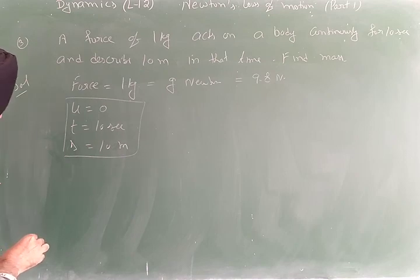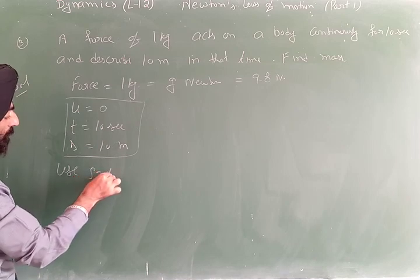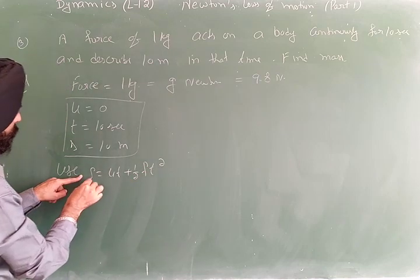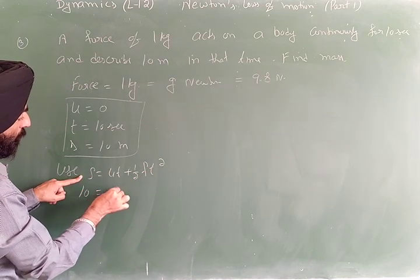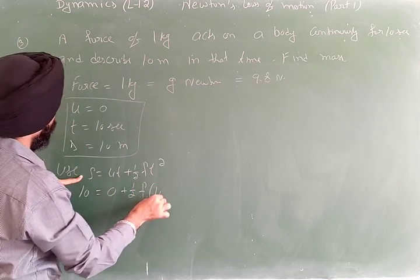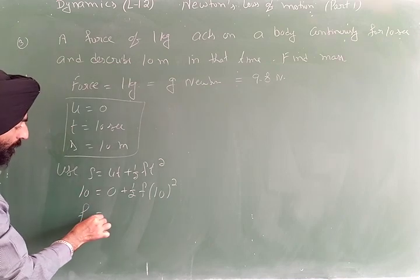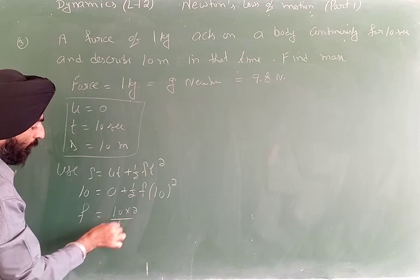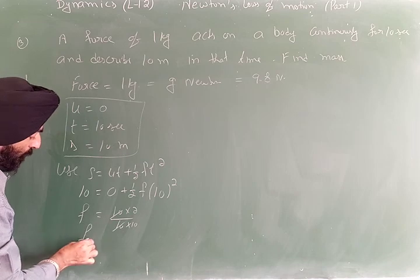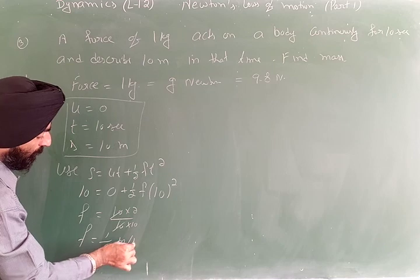Since v is absent, choose s = ut + ½ft². With u = 0: 10 = 0 + ½ × f × 100, so f = 10 × 2 / 100 = 1/5 meter per second squared.